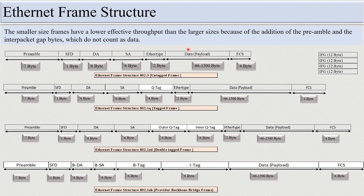Suppose we want to send 460 bytes of data using 46-byte data payload frames — there will be 10 Ethernet frames, and every frame includes the preamble, SFD, and IFG overhead. If instead we use a single 460-byte data payload, we only need one Ethernet frame. This overhead included in every smaller frame is the main reason smaller frame sizes reduce throughput.